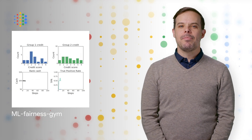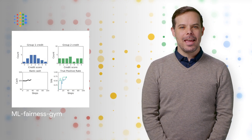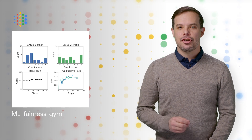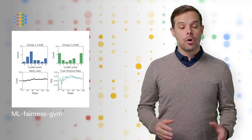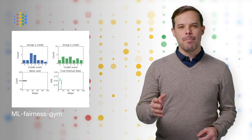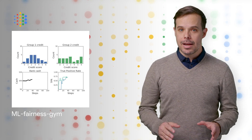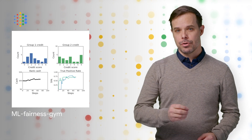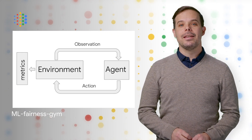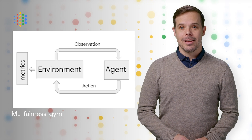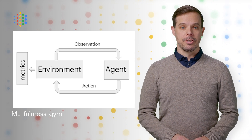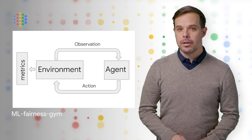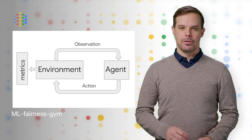Machine learning systems have been increasingly deployed to aid in high-impact decision making, such as determining criminal sentencing, child welfare assessments, who receives medical attention, and many other settings. Understanding whether such systems are fair is crucial. To help with this, we have released ML Fairness Gym, a set of components for building simple simulations that explore potential long-run impacts of deploying machine learning-based decision systems in social environments.